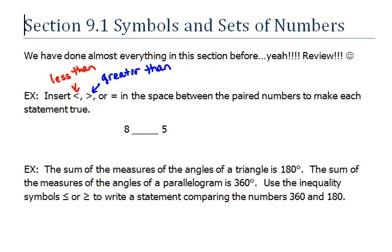Insert less than, greater than, or equal in the space between the paired numbers to make each statement true. This example is not difficult. We know that 8 is larger than 5, but just in case, especially when they start introducing negatives, remember you can always draw out a number line. On a number line, things to the left are smaller, things to the right are larger. So in this case we would put in the greater than symbol.